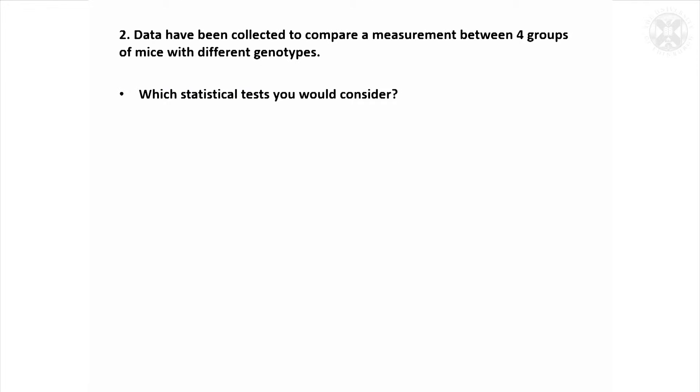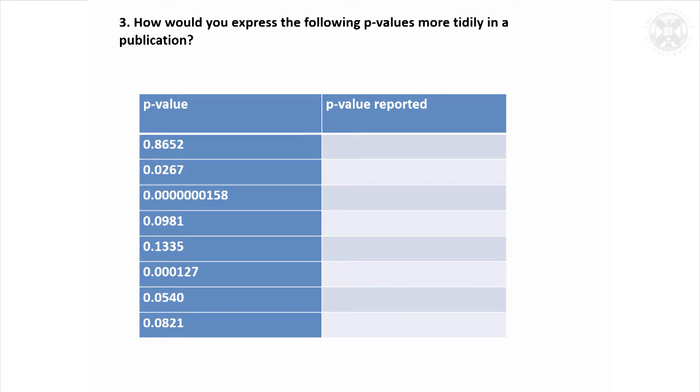If you've got four groups of mice and they've each got a different genotype and you wanted to compare them, which tests would you consider? This is just a general question, I haven't got any data. Yeah, that's right, Kruskal-Wallis test if the residuals weren't normally distributed. This is just about reporting p-values, and I'll just go through this quickly.